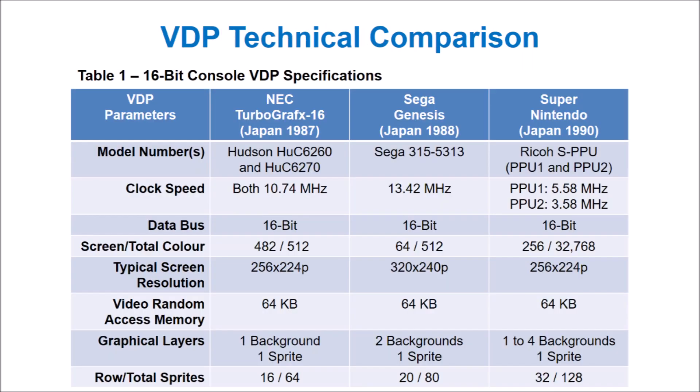Table 1 shows a comparison of the specifications of each console. While the TurboGrafx-16 has an 8-bit CPU, it has two 16-bit video processors. The Hudson HU6270 is the main video processor, and the HU6260 is the color encoder. One of the TurboGrafx-16's greatest strengths is the ability to display up to 482 colors on screen. However, its primary limitation was having only one background layer, making it difficult — although not impossible — to produce parallax and multi-layered background effects.